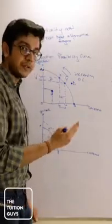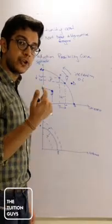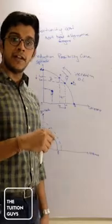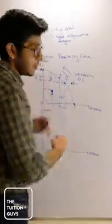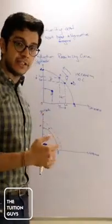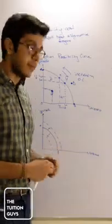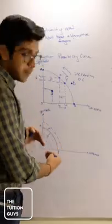Our PPC can shift outwards based on two things: the quality of our factors of production or the quantity of our factors of production. Let's say America or India or anyone gave us more kokomo and spinach. Automatically we would have shifted our PPC out. But if there was a natural disaster or there was a war and a lot of our resources were damaged, we might actually have to move into a point like Z which would shift our PPC in.